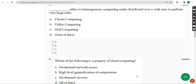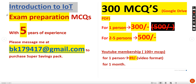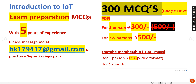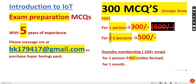Before the fifth question, a small announcement: for the course Introduction to Internet of Things, we have prepared exam preparation MCQs — a combination of previous year questions and handmade questions. You get 300 MCQs, almost equal to three years of NPTEL questions, in a Google Drive PDF link. For one person it is 300 rupees. For a group of two to five persons combined it is 500 rupees — a very reduced amount per person.